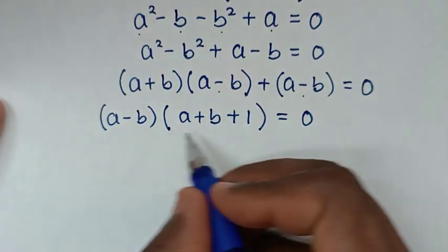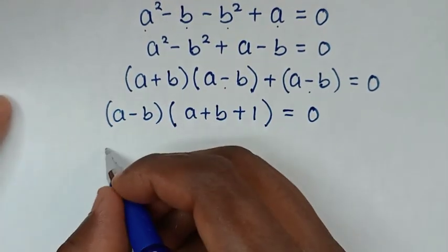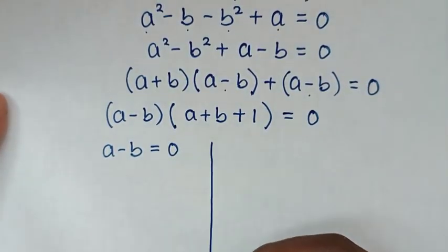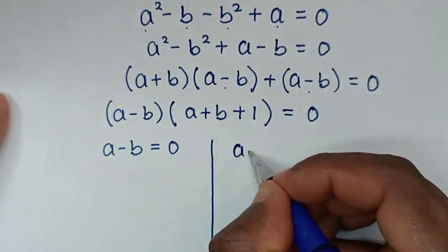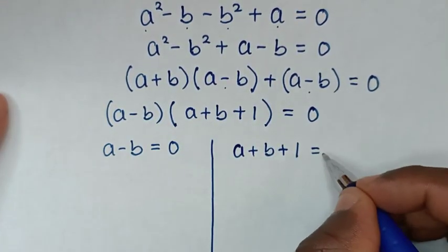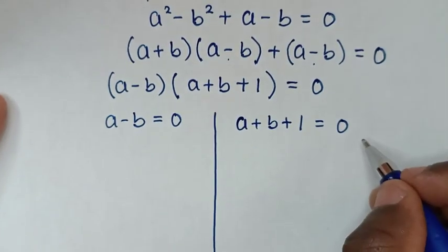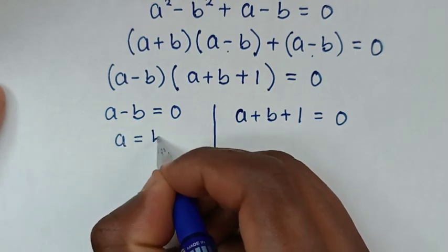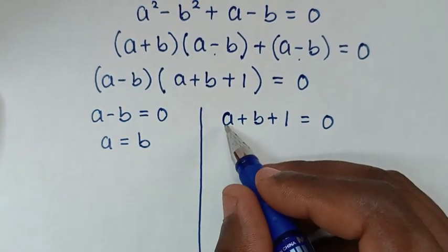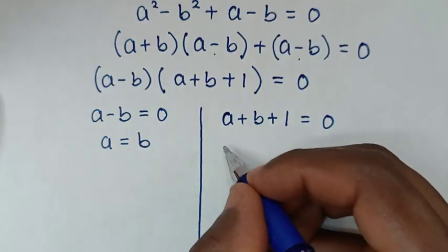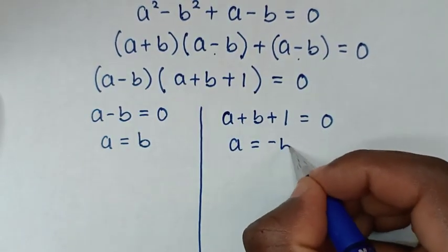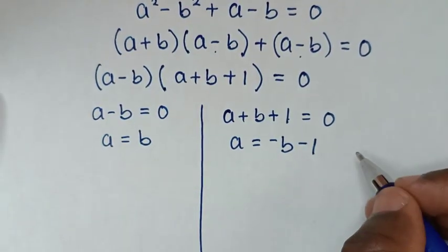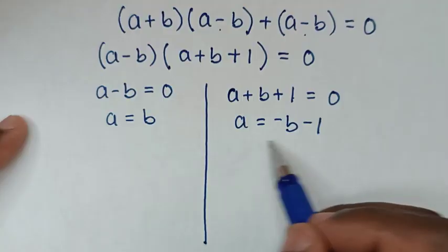From here we have two solutions. The first solution is a minus b equals 0, which gives a equals b. The second solution is a plus b plus 1 equals 0. Making a the subject in the second equation, we take b plus 1 to the other side, giving a equals negative b minus 1.